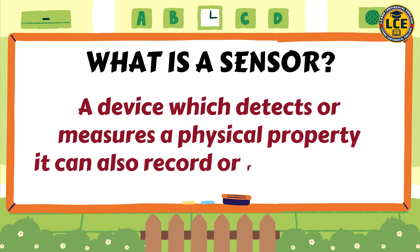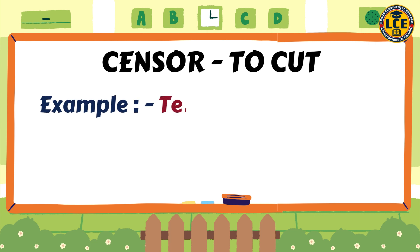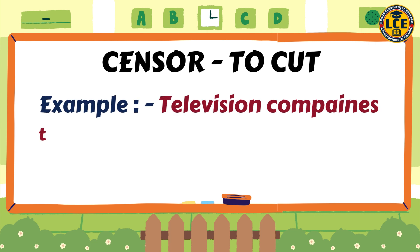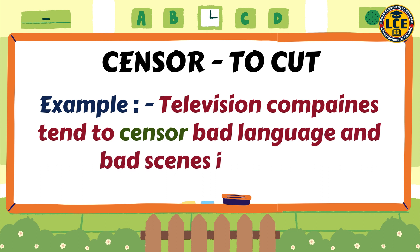Ab hum doosre word, c-e-n-s-o-r ko dekh lete hain, jiska matlab hota hai to cut, kaat chhaat karna. Yeh generally books ya movies mein release hone se pehle ya publish hone se pehle censor kiya jata hai. Example: 'Television companies tend to censor bad language and bad scenes in movies.'